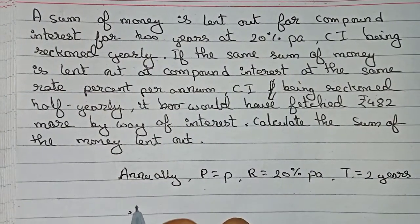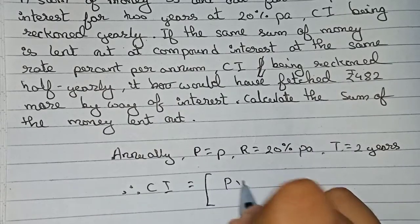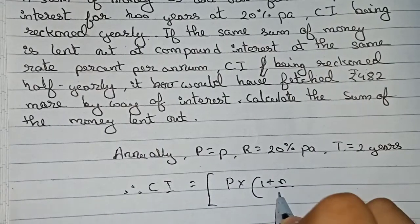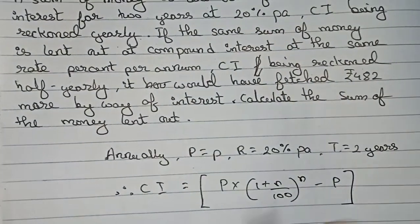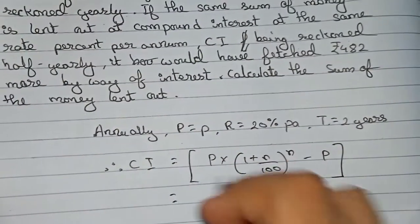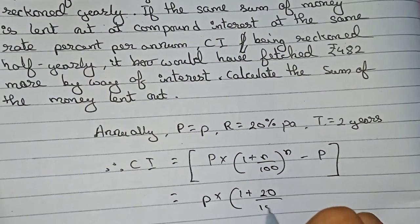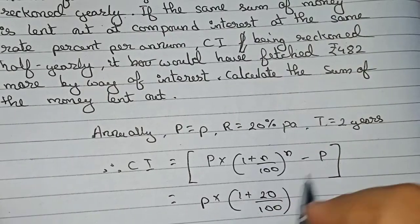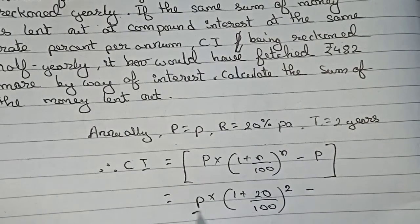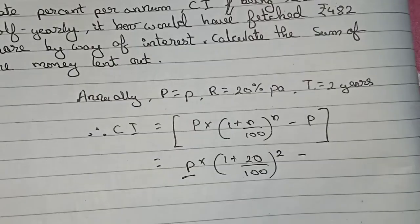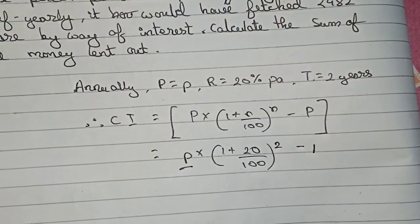Therefore, CI equals principal into (1 + rate/100) to the power n, minus principal. This is the formula. Now putting in the values: P into (1 + 20/100) to the power 2, minus P. Taking principal as common, this becomes P into [(1 + 20/100)² − 1].